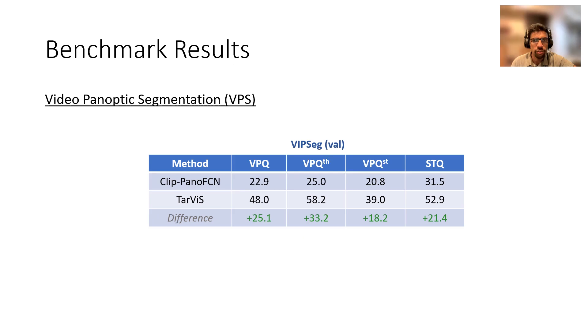Lastly, on the recently introduced VIPSEC dataset for panoptic segmentation, we see that Tarvis performs over 25% better compared to the dataset baseline.